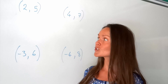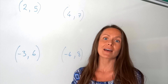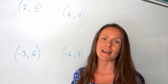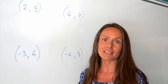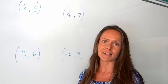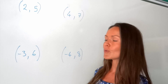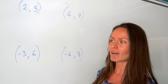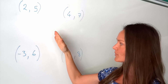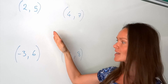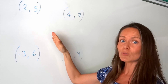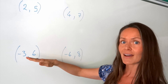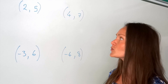Hey guys, today I'm going to show you how to work out the gradient of a straight line. The gradient is just how steep the line is. A very steep line with a very big gradient would be sloped something like this, and a very small gradient would be sloped a lot flatter, like that.